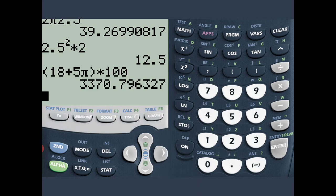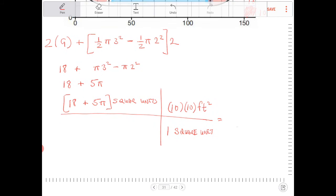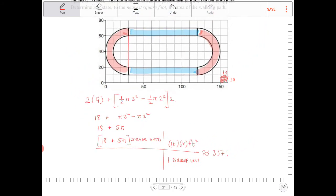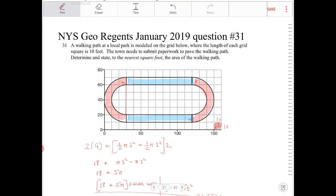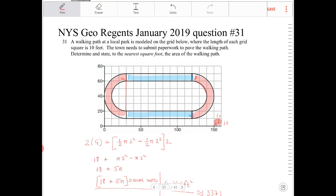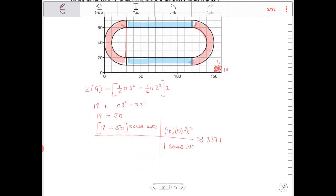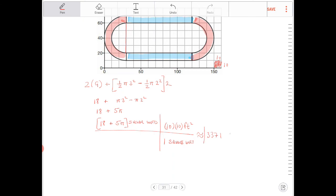I believe it said, right? 3371. So this is going to be approximately 3371. Let me just confirm whether or not we are rounding to the nearest square foot. Yes, we are. So this is our final answer then.